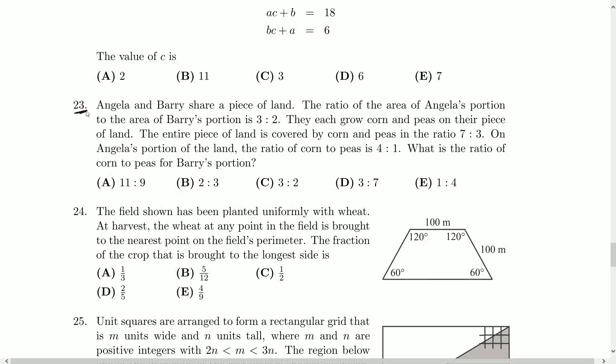Angela and Barry share a piece of land. The ratio of the area of Angela's portion to the area of Barry's portion is three to two. So Angela has 50% more land than Barry, we might say.